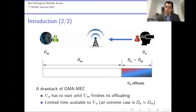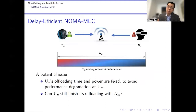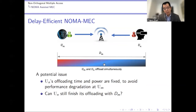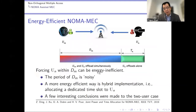However, it can also be problematic if the two users' deadlines are very close to each other, because then the second user does not have much time to do offloading. If delay is the concern, NOMA can be applied as follows. In the first D_M seconds, OMA only allows User M to offload. With NOMA, we can encourage both users to offload simultaneously, so extra upload time is not needed and the offloading delay can be greatly reduced.